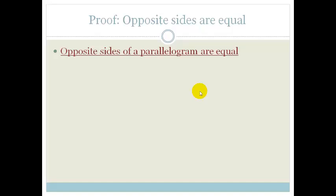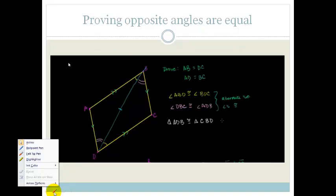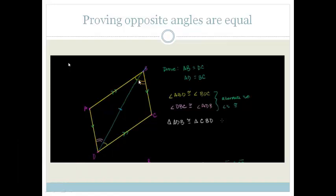We just needed to prove that opposite sides of a parallelogram are equal. Now we're going to use part of the video and prove that opposite angles are equal — in fact, it's kind of already done for us. He proved that triangle ABD is congruent to triangle DCB. If you look at that, this little angle here is equal to that angle, and this double angle is equal to that.